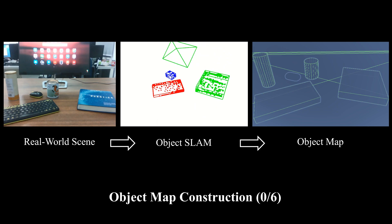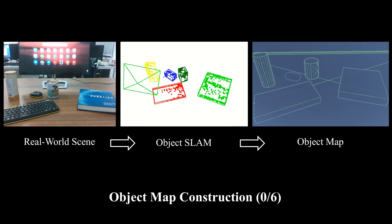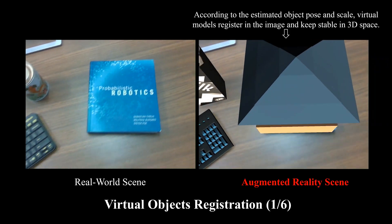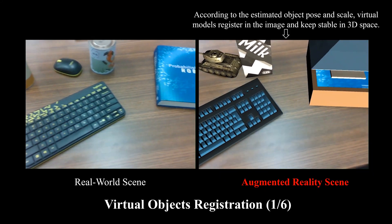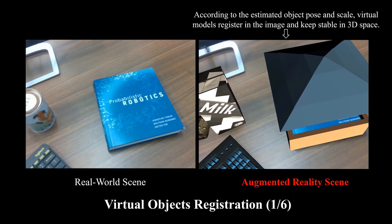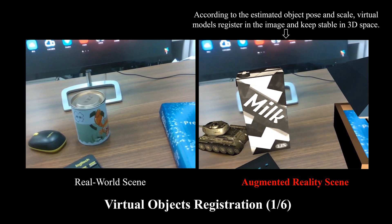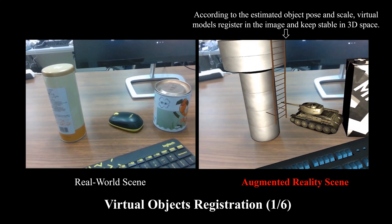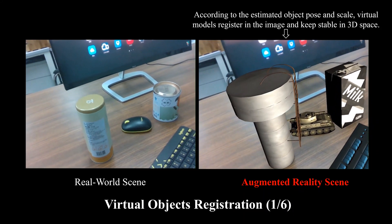We leverage the object's lamp to map the real-world scene, getting an object map with accurate object pose and scale. The left video shows the real-world images, and the right video demonstrates the augmented reality scene with virtual models. According to the estimated object pose and scale, virtual objects registered in the image can keep stable in 3D space.